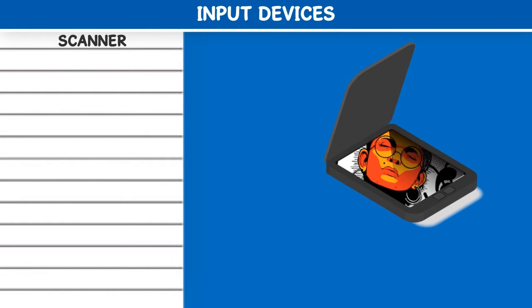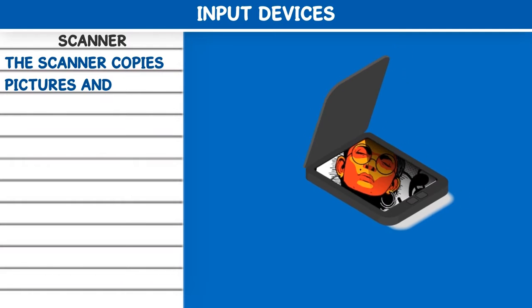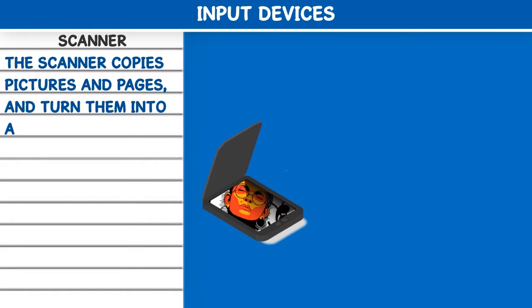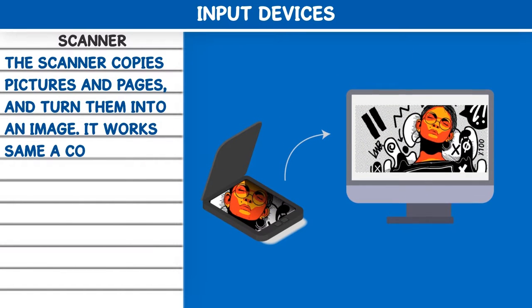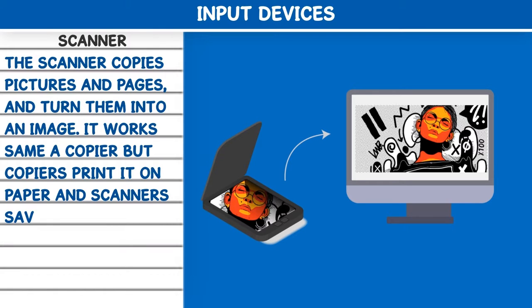Scanner: The scanner copies pictures and pages and turns them into an image. It works the same as a copier, but copiers print on paper and scanners save the image on the computer.